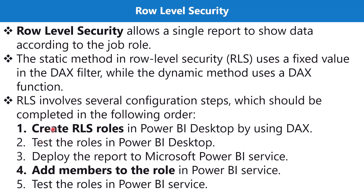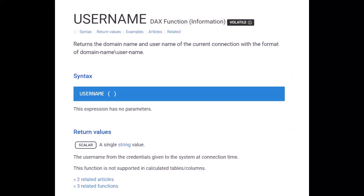In the last video we focused on the first two parts: creating roles and testing them in desktop. Now we are going to deploy the report to Power BI service, add memberships to the role, and then test everything in the Power BI service. The dynamic row level security removes the static element from role creation — instead of a fixed value like 'northwest,' we use a DAX function.